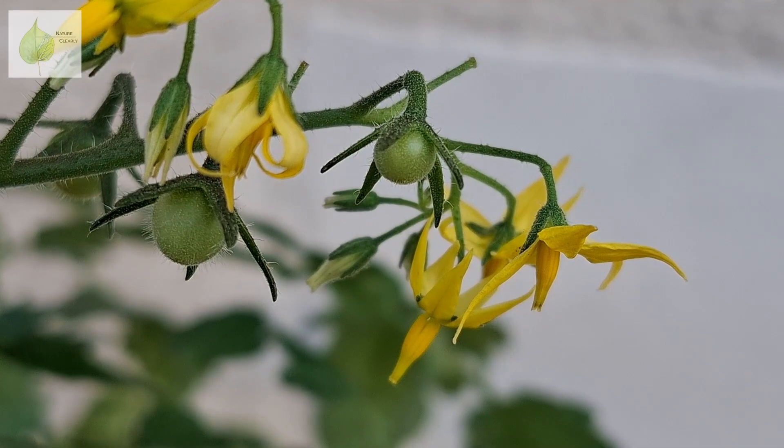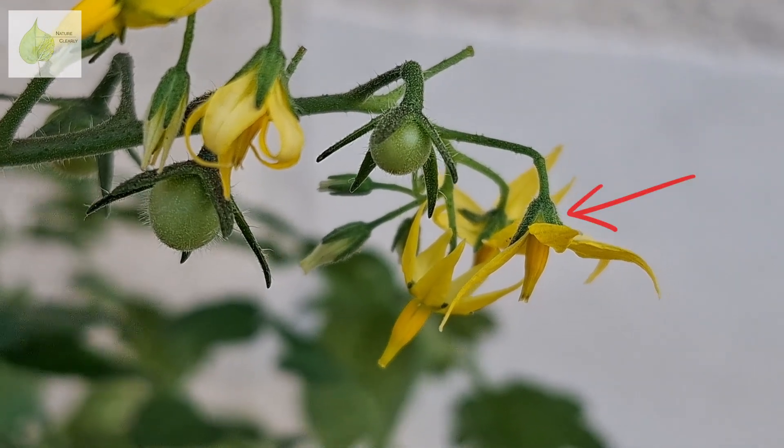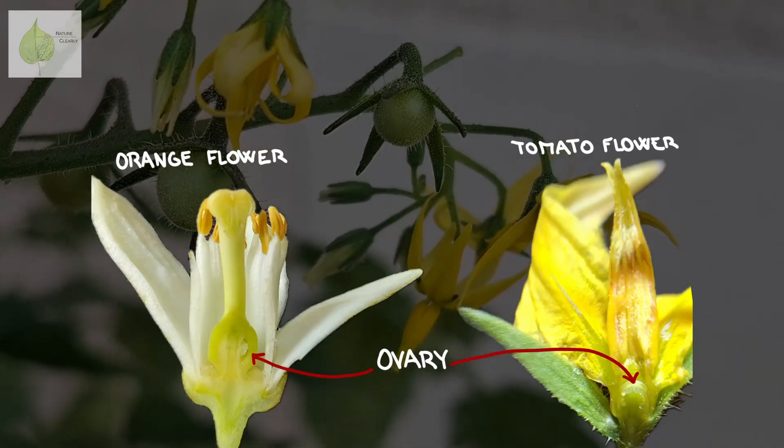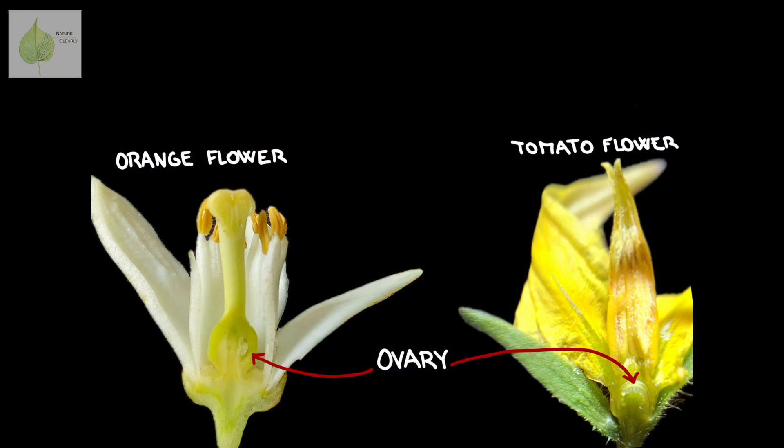So what is a fruit and how does it form? Even though there might be many often very surprising disputes about what is a fruit and what is a vegetable, the botanical definition of a fruit is pretty straightforward. A fruit develops from a flower's ovary, which we see in a flower in this area that's often round or bulging, especially visible if we remove the petals.